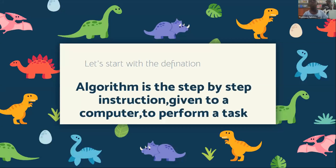Let's start with the definition. An algorithm is the step-by-step instruction given to the computer to perform a task.